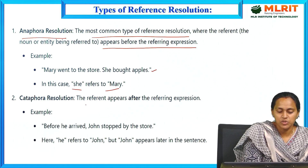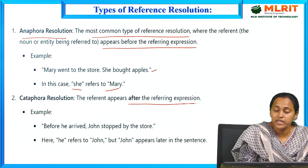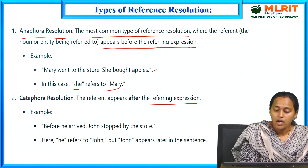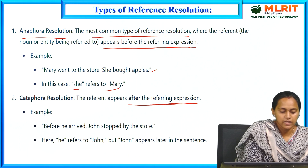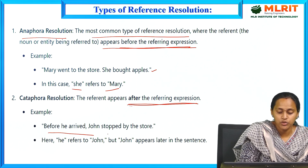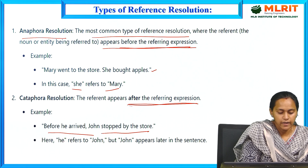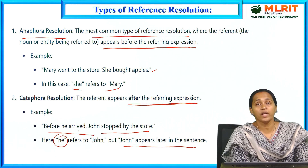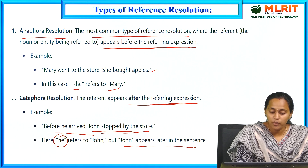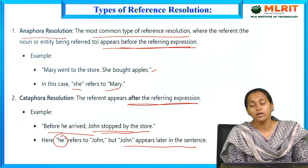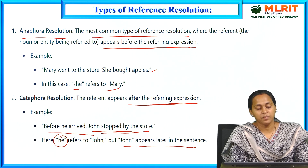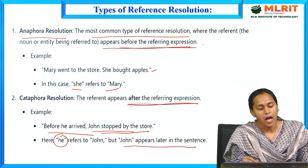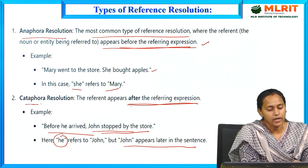Next is cataphora resolution, where the referent appears after the referring expression — the opposite of anaphora. For example: 'Before he arrived, John stopped by the store.' Here, 'he' refers to John, but John appears later in the sentence. This is the main difference between anaphora resolution and cataphora resolution.